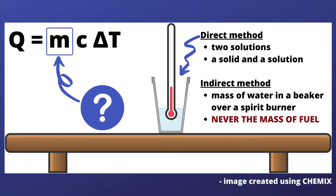This isn't really too different from the example of two solutions being added together. So if I had sodium hydroxide and hydrochloric acid, what I would normally do is still the same — I add together the mass of the two separate solutions and use that. So for instance if I had 25 centimeters cubed of sodium hydroxide and 25 centimeters cubed of hydrochloric acid, then my value of m would be 50, because that would be 50 centimeters cubed, and I would just put 50 grams into the calculation.